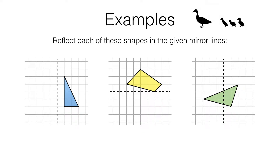In this lesson we're reflecting shapes in given mirror lines. Let's take a look at the first example. We've got a mirror line and a triangle on the right hand side of it, and we've got to reflect the triangle in the mirror line.